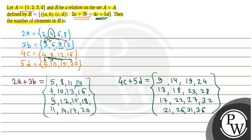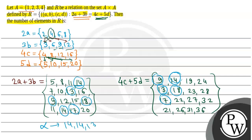Now we find the common elements between the two sets. 14 is in the 2A+3B set and also in the 4C+5D set — and it appears two times, meaning double mapping is possible. 13 is common in both sets. 9 is common in both sets. 18 is common in both sets. Also 10 and 11 appear — so the possible values of alpha are 14 (twice), 13, 9, 18, giving us 6 possible values.